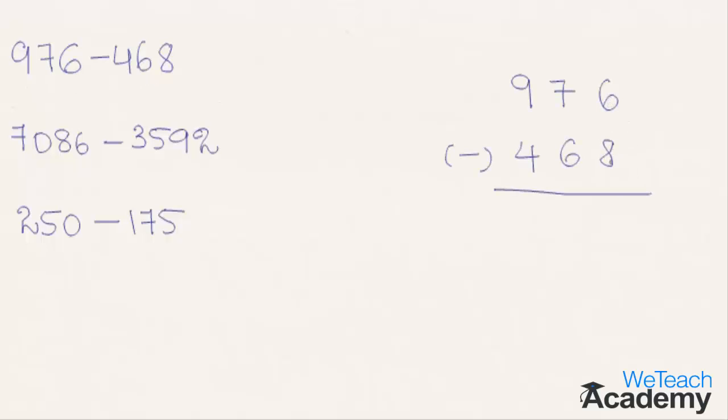So here in the ones column, 6 is less than 8, so let us borrow 1 from the next column. So here we get 16. 16 minus 8 is 8. As 1 is borrowed, 7 becomes 6, and 6 minus 6 is 0. Coming to the hundreds column, 9 minus 4 is nothing but 5, and we get the result 508.